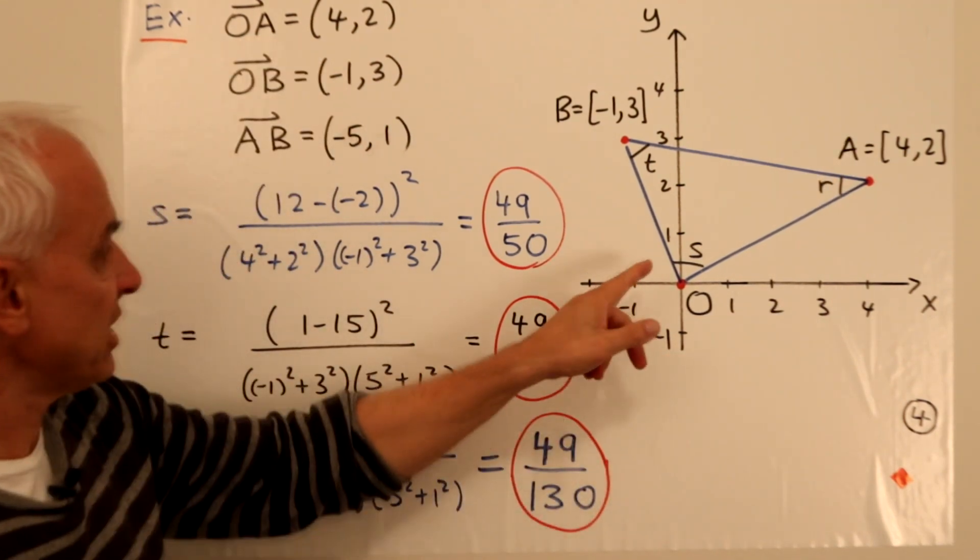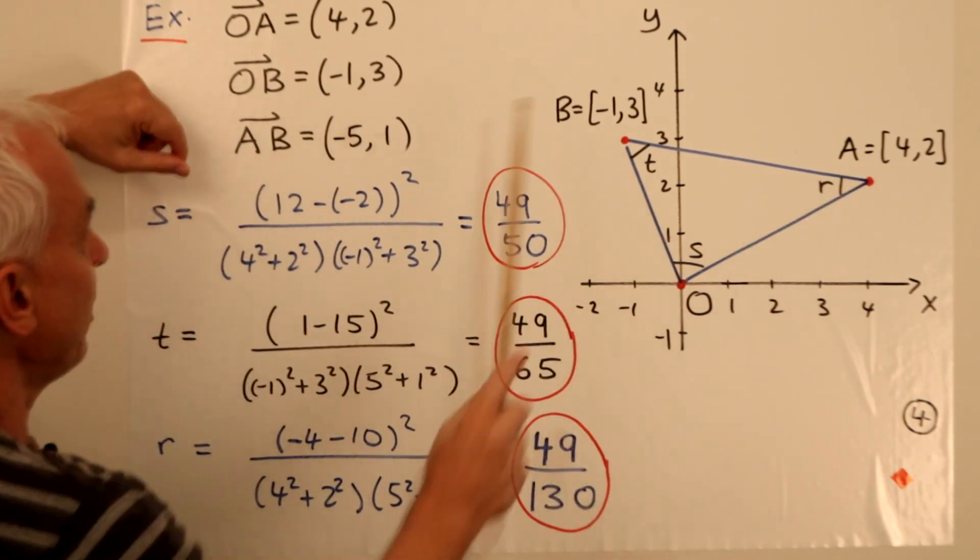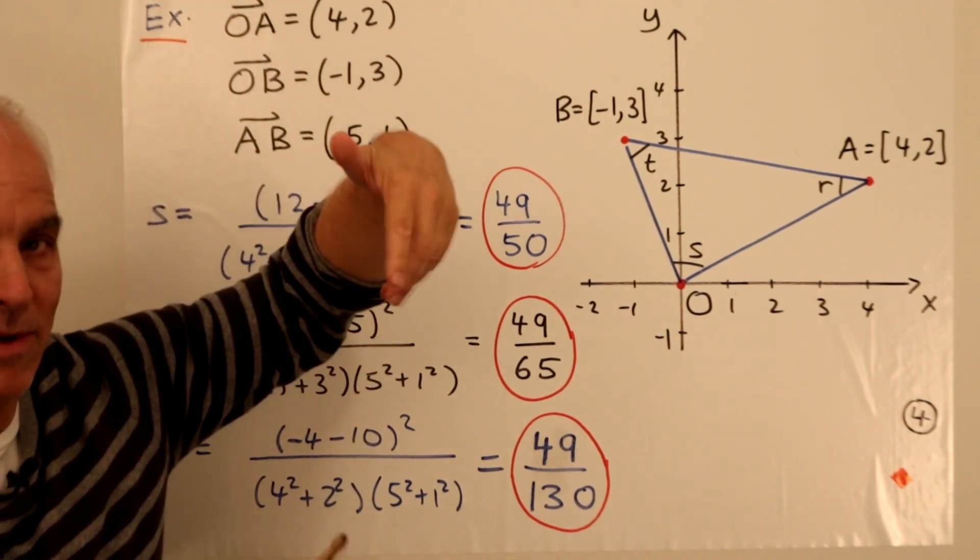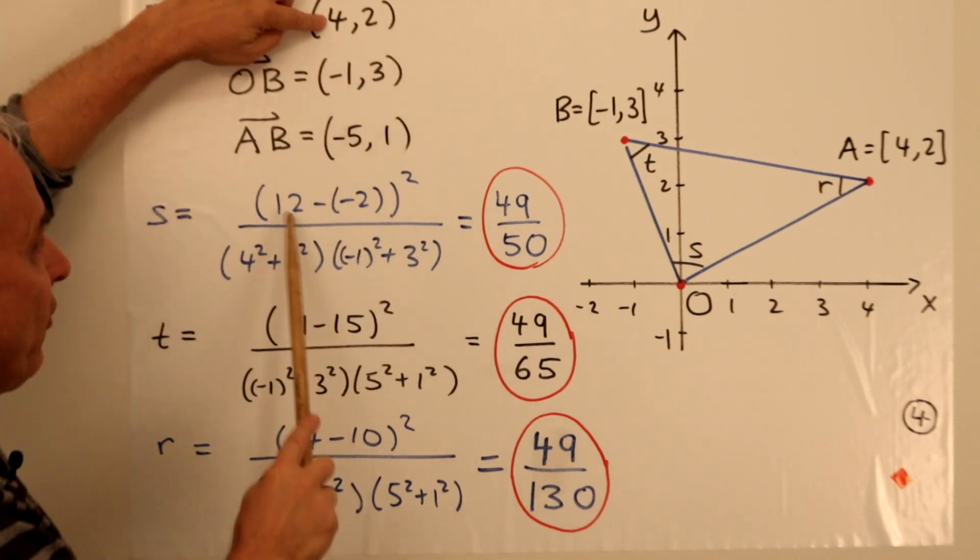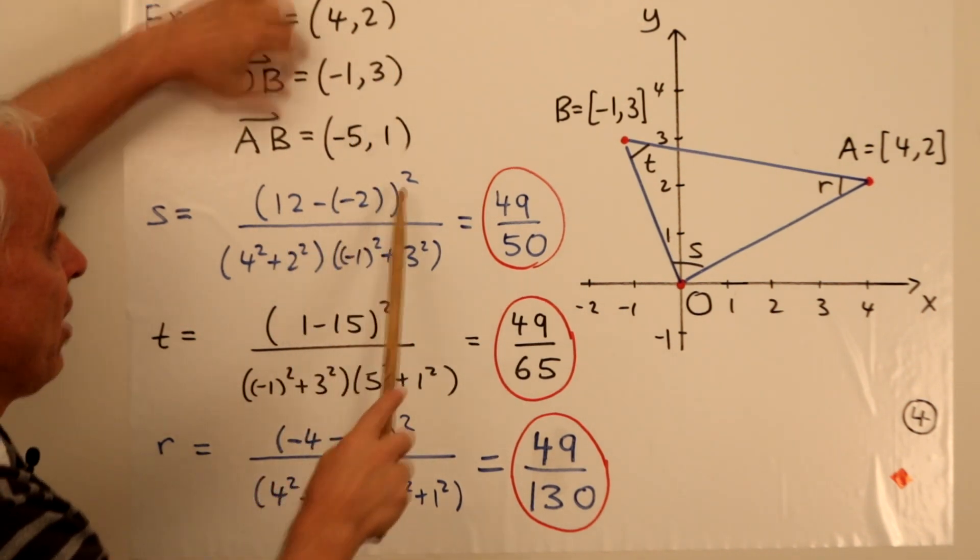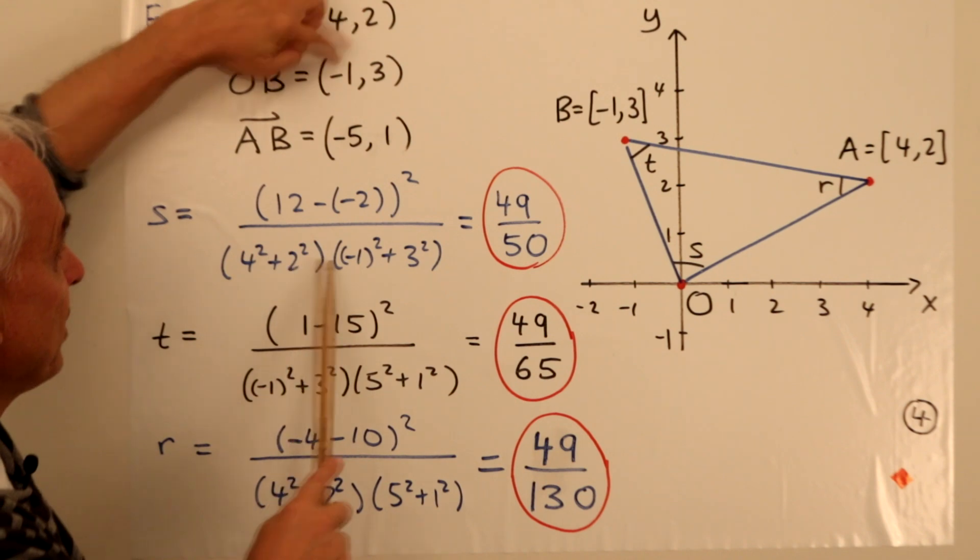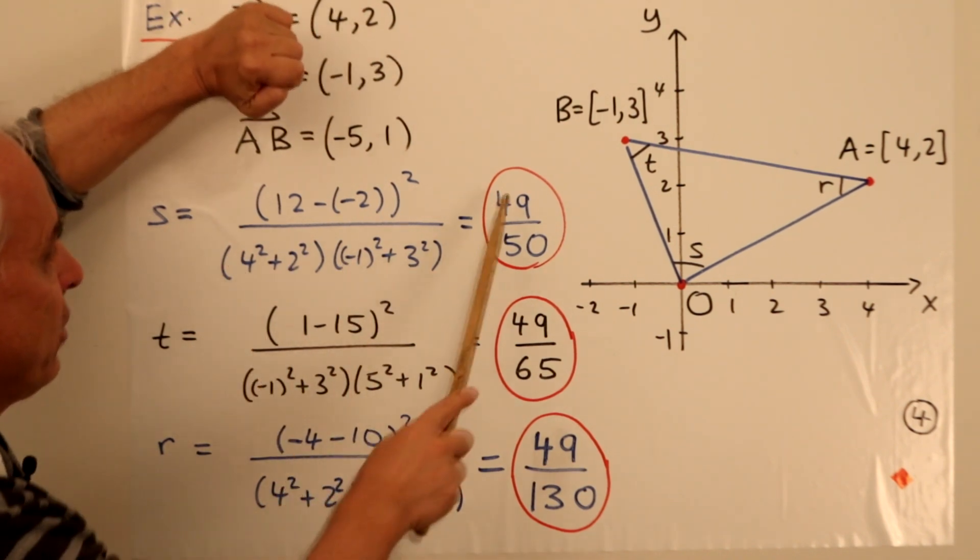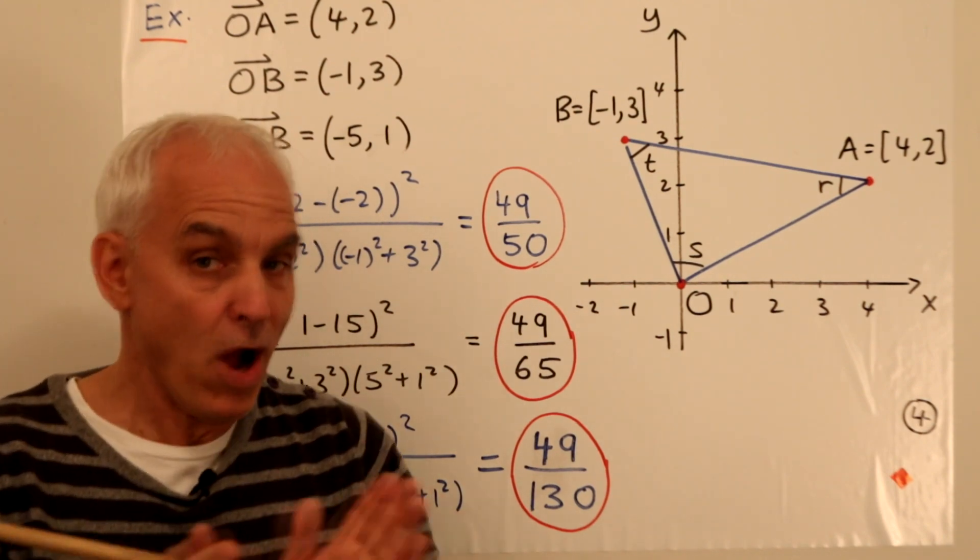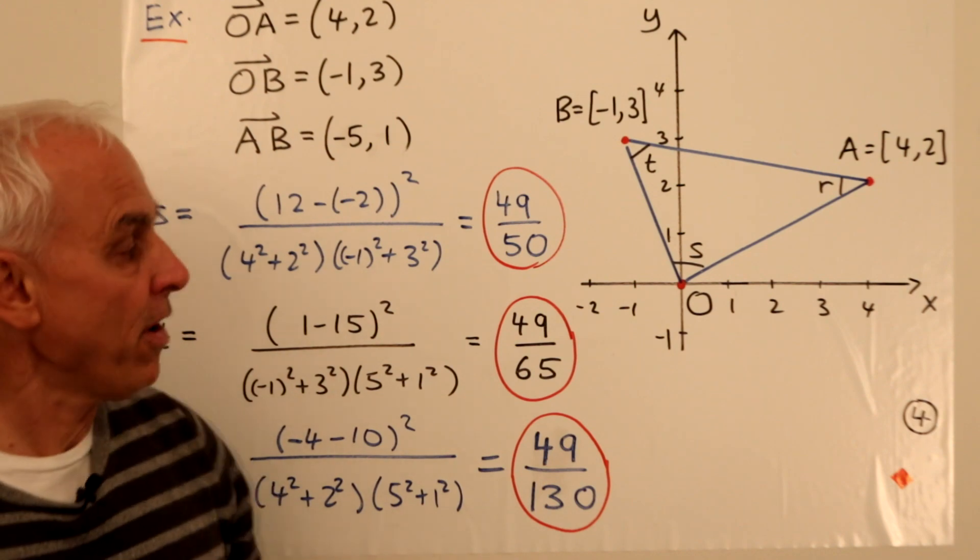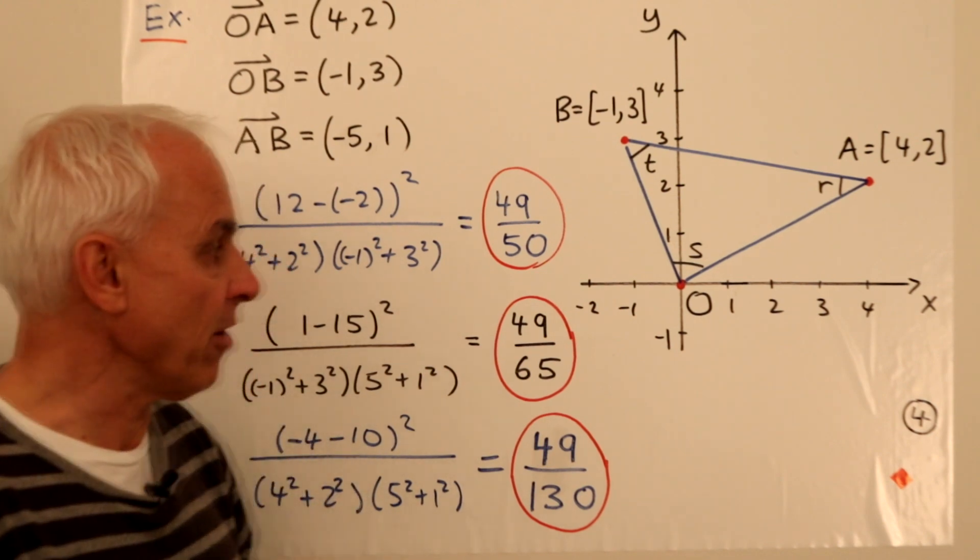OK, we have three vectors. So what about this spread S? How do we calculate that? Well, we look at the two vectors here and here. These are these two vectors. And we apply the formula that we've just learnt. The determinant here is 4 times 3 minus 2 times minus 1. So 12 minus minus 2. And we have to square that. Divided by 4 squared plus 2 squared times minus 1 squared plus 3 squared. And you can check that that's 49 over 50. That's pretty close to being 1. We've seen 49, 50 before. That's close to being 1. And that's almost a right angle, or almost perpendicular sides there. But not quite.